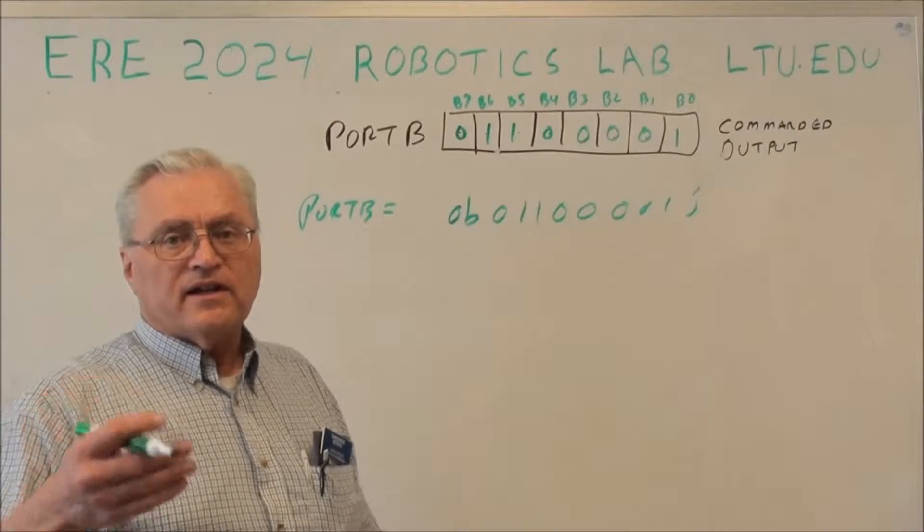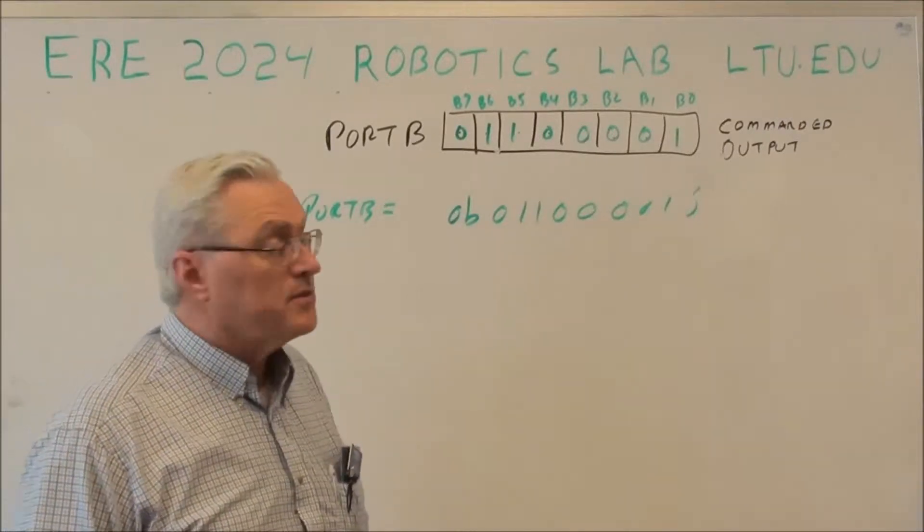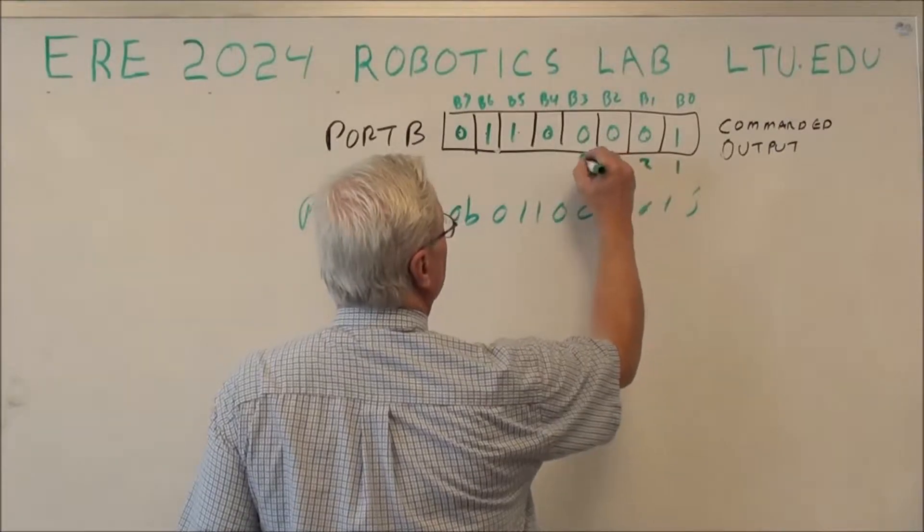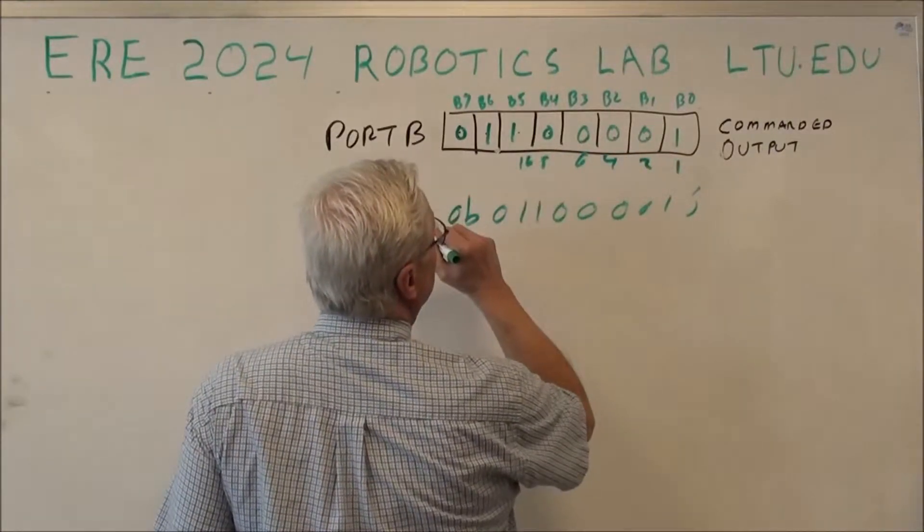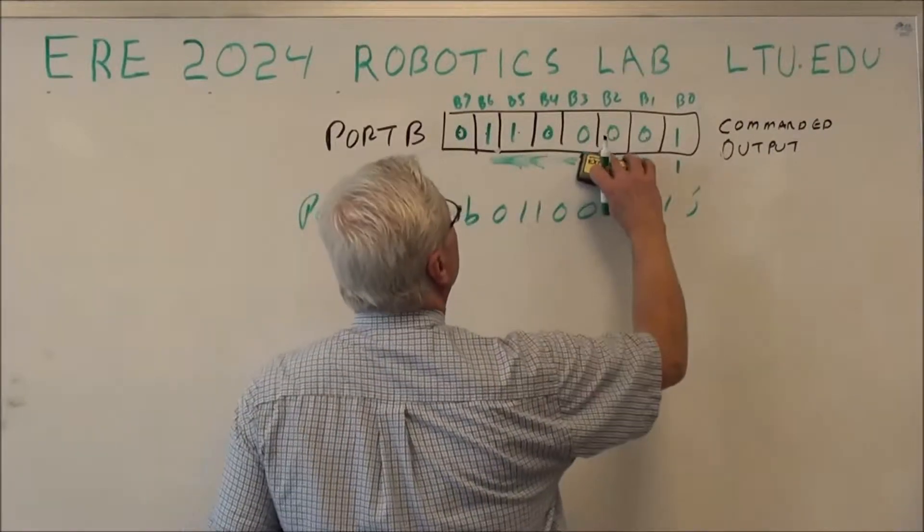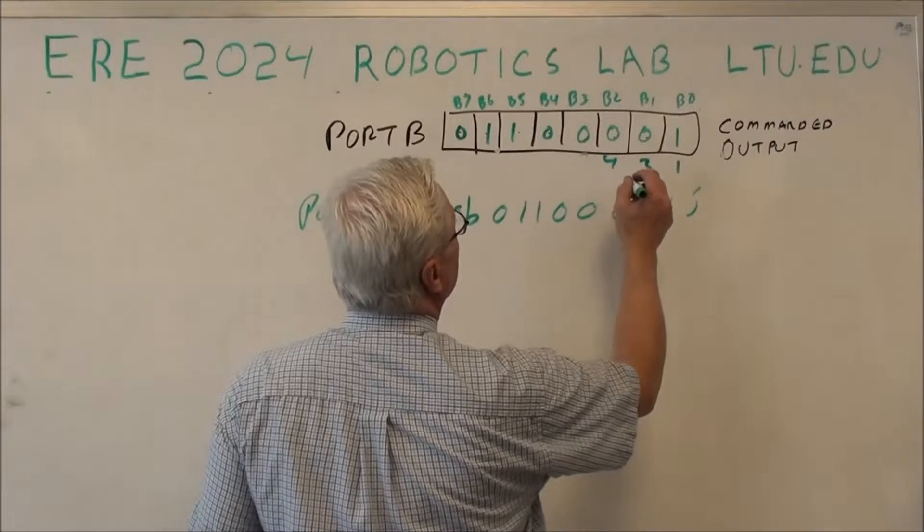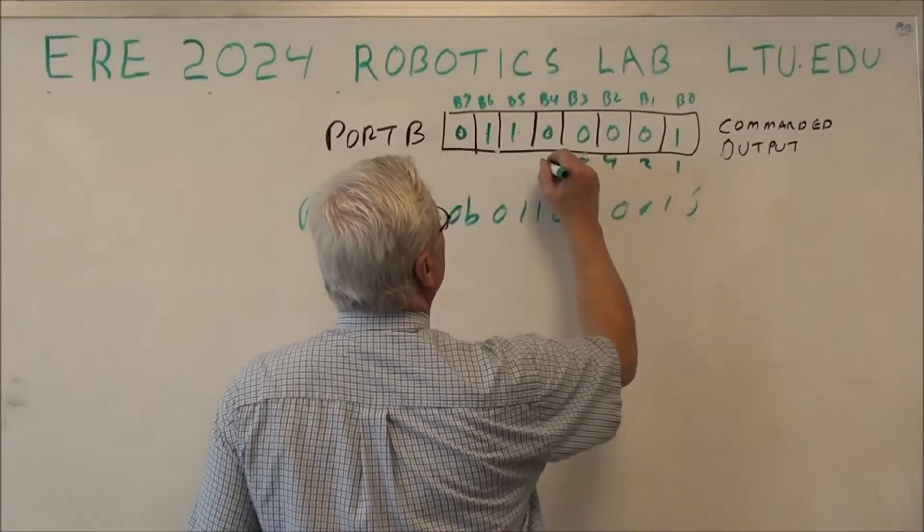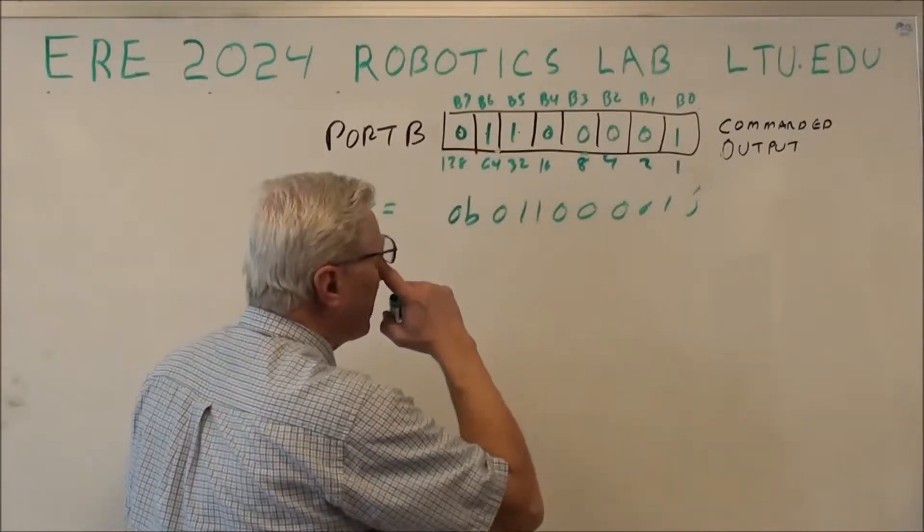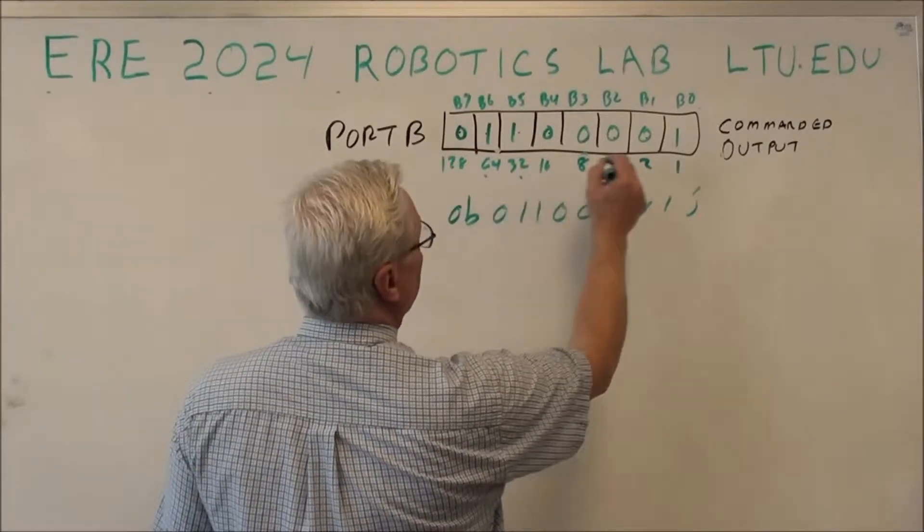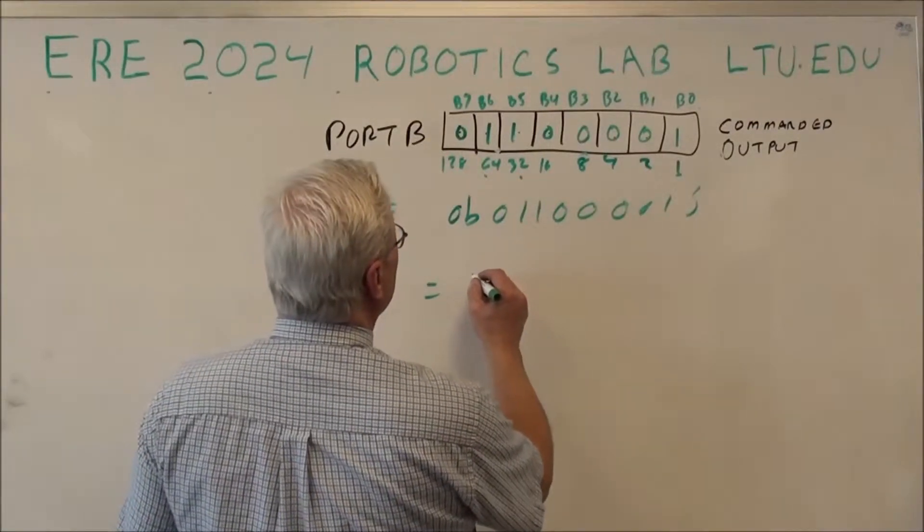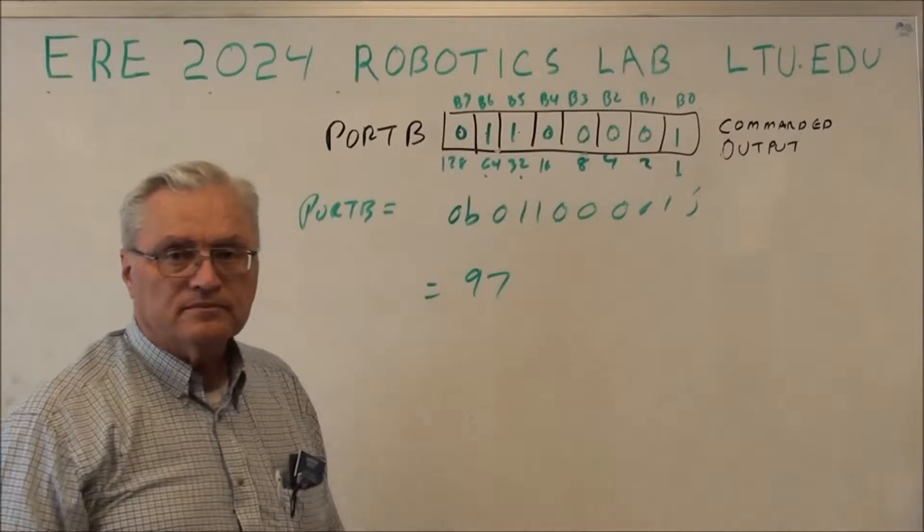We could evaluate it and express it in decimal terms, because this is the ones position, twos, four, eight, sixteen, thirty-two, sixty-four, one twenty-eight. And so I could add these up. I've got sixty-four plus thirty-two plus one, so it's equal to ninety-seven decimal.